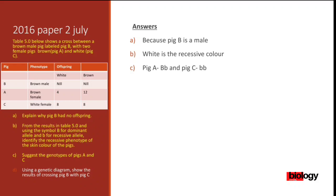A heterozygous genotype is one where one allele is dominant and the other is recessive. Brown is dominant, represented by capital B; white is recessive, represented by small b. Remember: dominant alleles are represented by capital letters and recessive alleles by small letters. That is why the genotype for pig A is capital B small b.